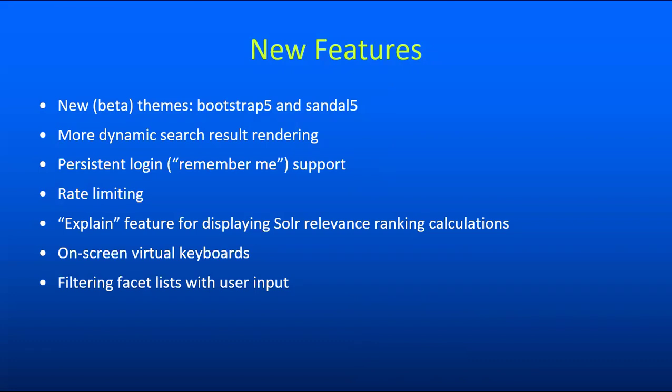We've added the ability to use user input to filter facet lists in the facet pop-ups. So if you have a facet field with hundreds or thousands of values, this makes it possible to narrow things down pretty quickly. We've also added support for multi-page selection in favorites lists, meaning that if users are checking off records to perform actions like removing favorites or emailing them, the checkbox selections persist across pages of results, making it easier to do larger bulk activities.